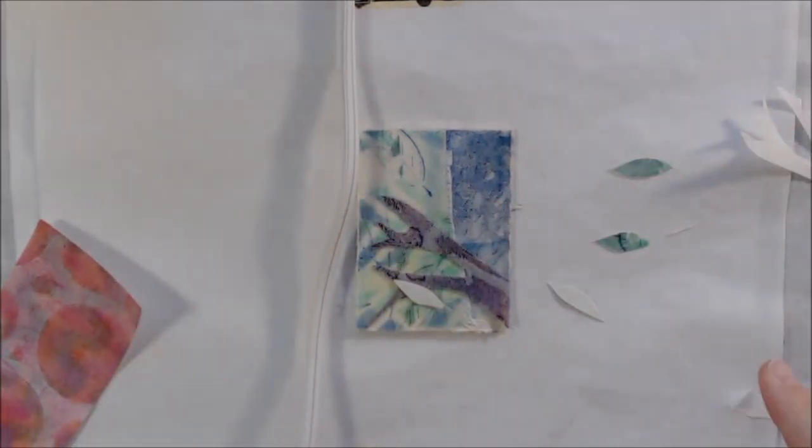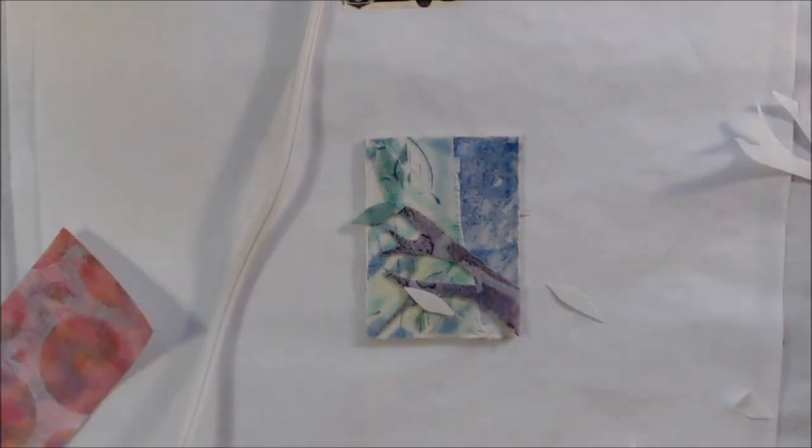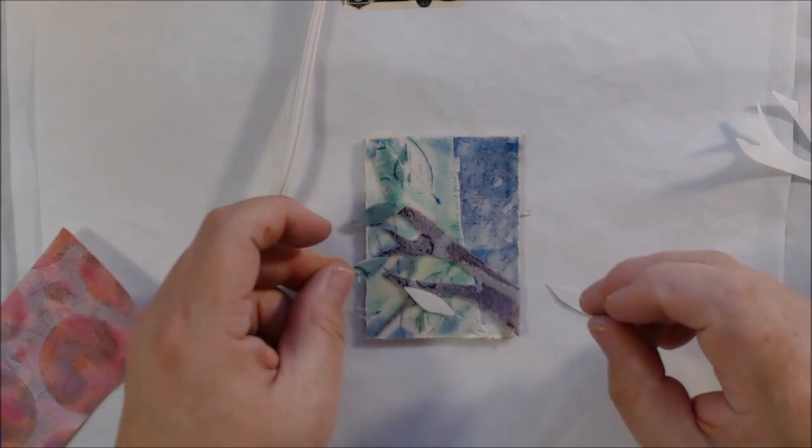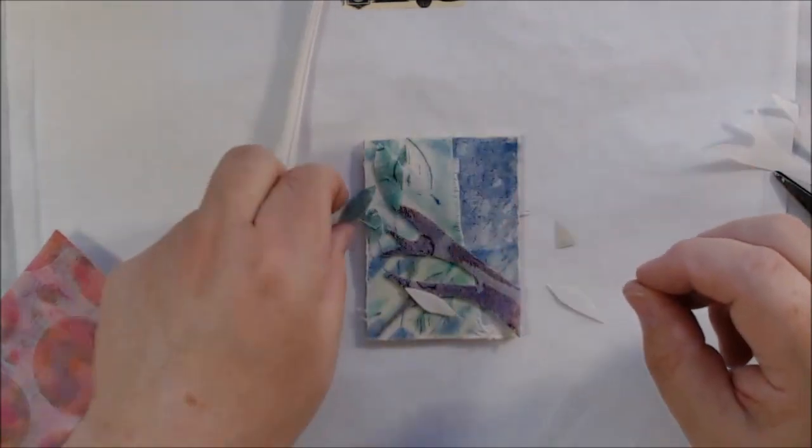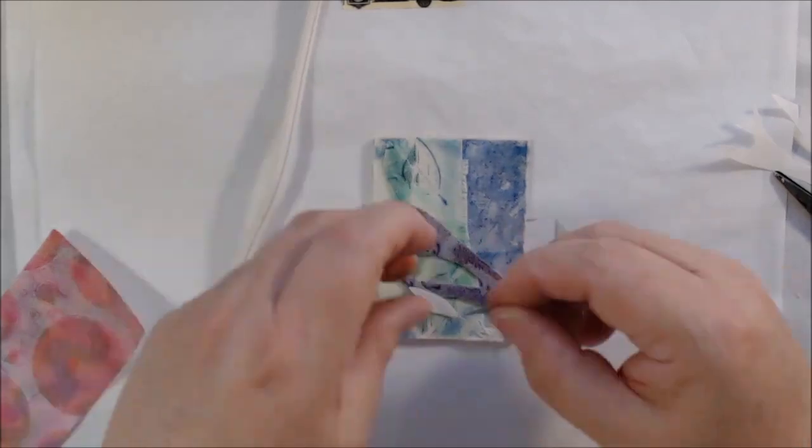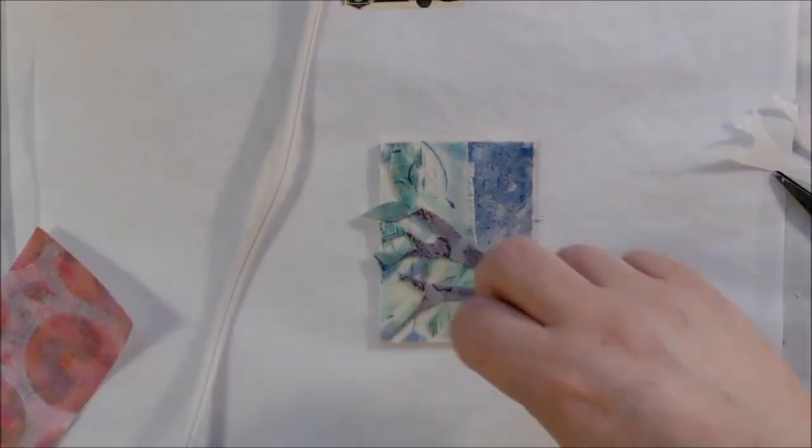Heat and Bond is a fabric adhesive that you can sew through, so it's a really easy way to attach pieces that you can then applique around to keep them on.